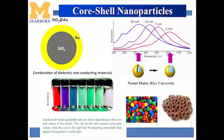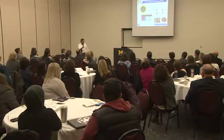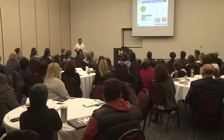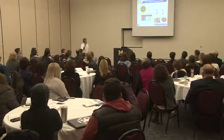Now the interesting part: the core-shell structure. Why do I use M&Ms and chocolate-coated pretzels as an analogy? When you eat an M&M, it's crunchy with chocolate inside — it gives you a different, unique flavor combining salty and sweet. Same way, when you have something non-conducting coated with something conducting, it gives you a great material property. That's exactly what happens here.